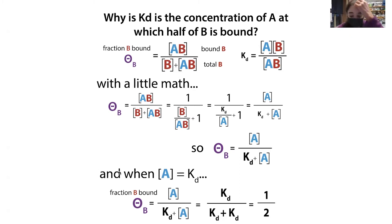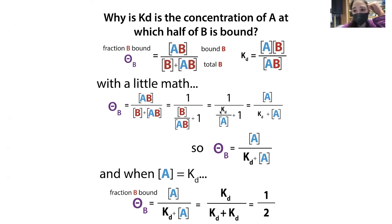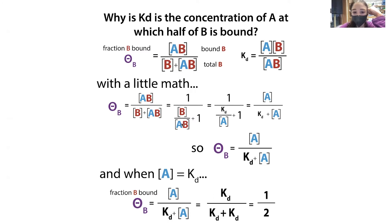When A equals the Kd, you substitute Kd in for A and get Kd divided by (Kd + Kd), which equals one-half. That's where the 'half' comes from. This derivation shows that the fraction of B bound equals A over (Kd + A). This is really powerful because all we need to measure is the fraction of B bound and the concentration of A, and we can figure out the Kd.